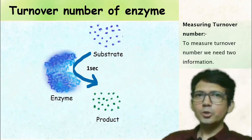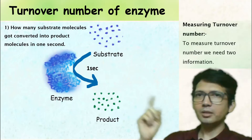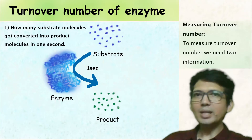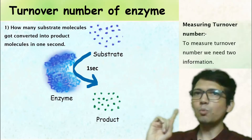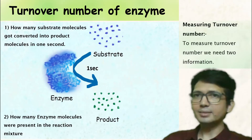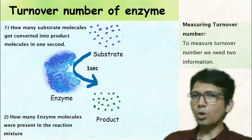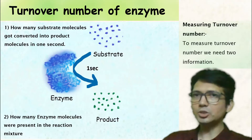To measure the turnover number, we need two pieces of information. The first is how many substrate molecules got converted into product molecules in one second, and the second is how many enzyme molecules were present in the reaction mixture.